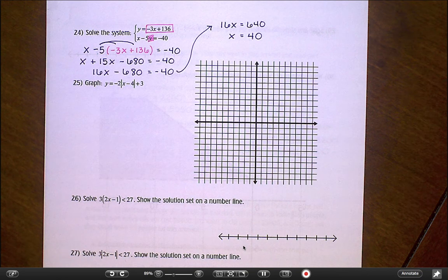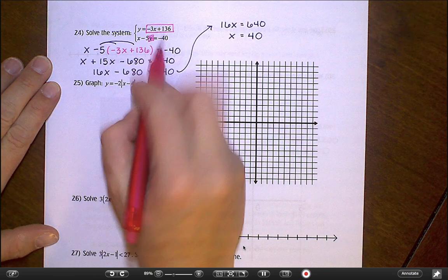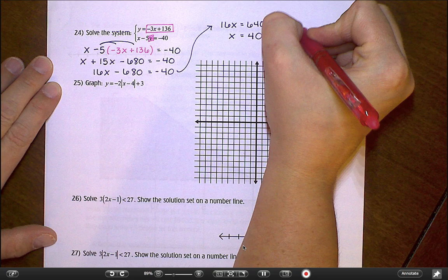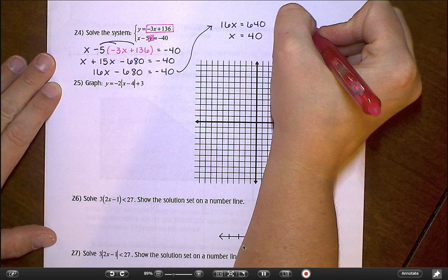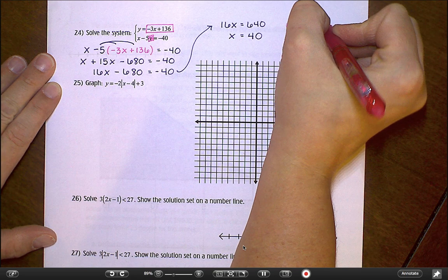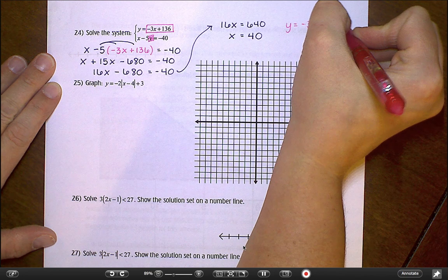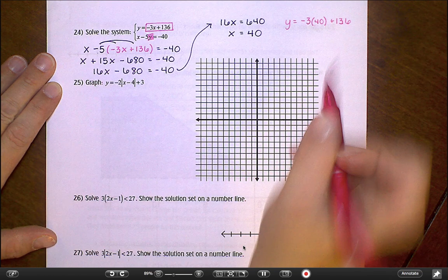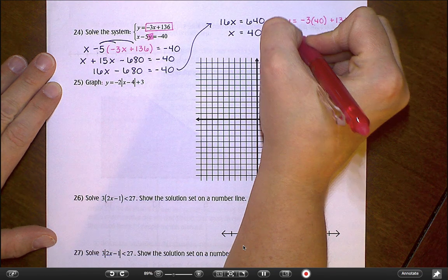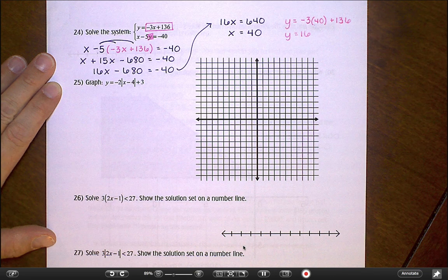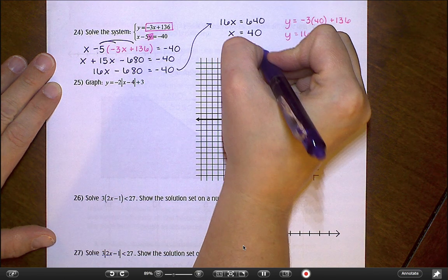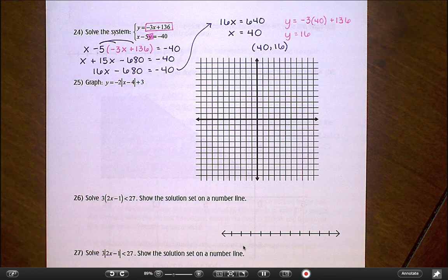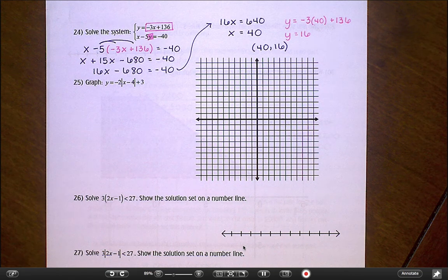Then I'm taking that 40 and plugging it back in over here where I have what y equals. So I'm going to go y equals negative 3 times 40 plus 136. That's negative 120, so negative 120 plus 136 is going to leave me with positive 16. And so then final answer there on that one would be 40 comma 16. Kind of big numbers for what you're used to with those problems, but that is correct.